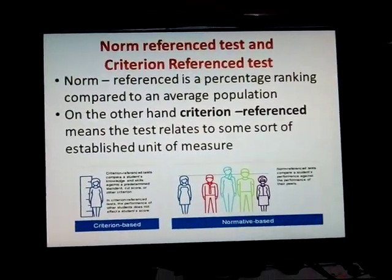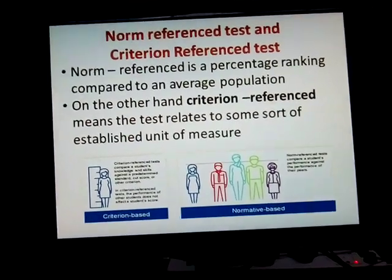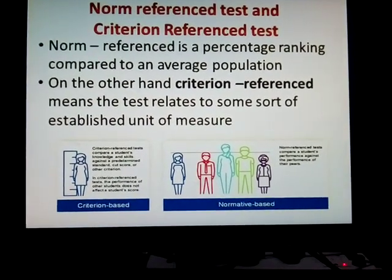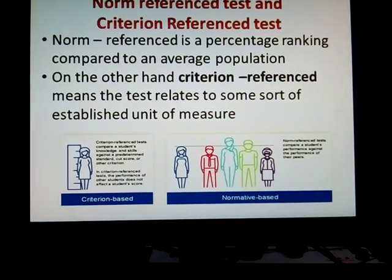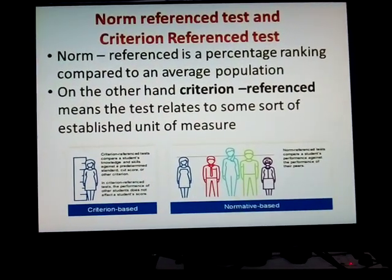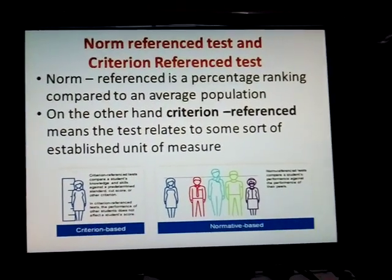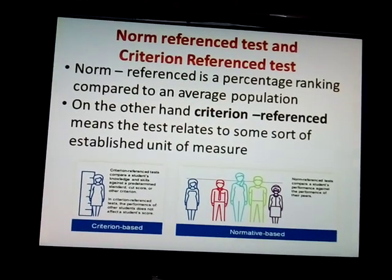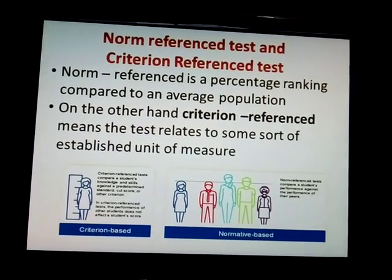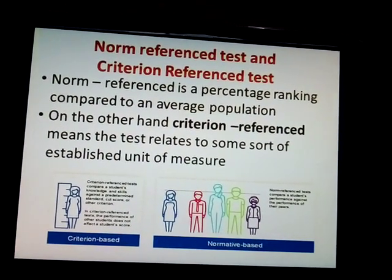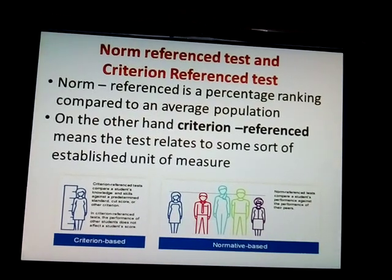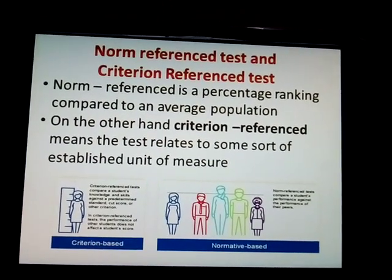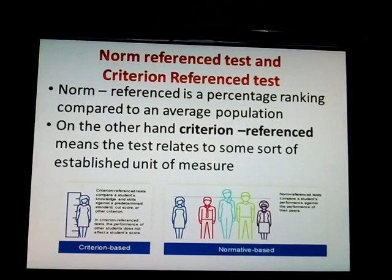Norm-referenced test and criterion-referenced test: Norm-referenced test compares students' percentage marks and ranking against the average population. Criterion-referenced test relates to established criteria — the student's knowledge and skills are measured against predetermined standards, cut scores, or gradations. The performance of one student does not affect another student's score. Norm-referenced test compares a student's performance against the performance of their peers.